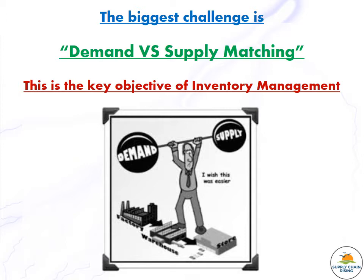Demand is the requirement from customers for different goods or services offered in the market. On the other hand, you have to consider supply capability — how many suppliers are available and how much capacity exists to fulfill customer demand. This match is very key, particularly in the supply chain management field.